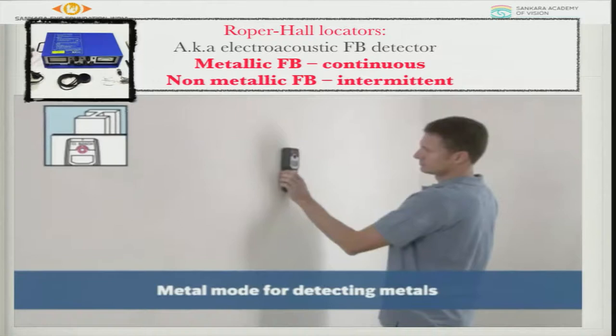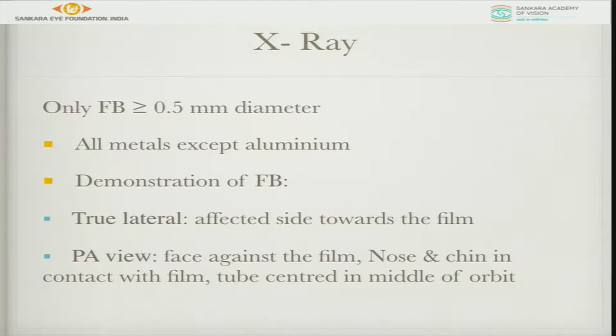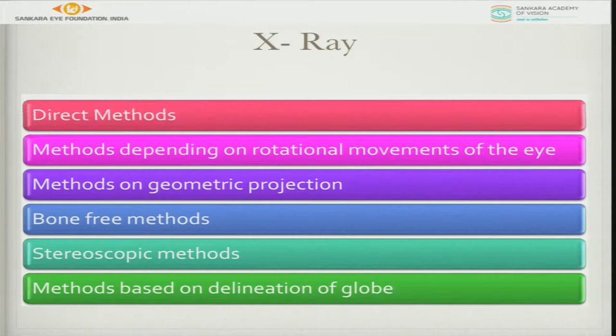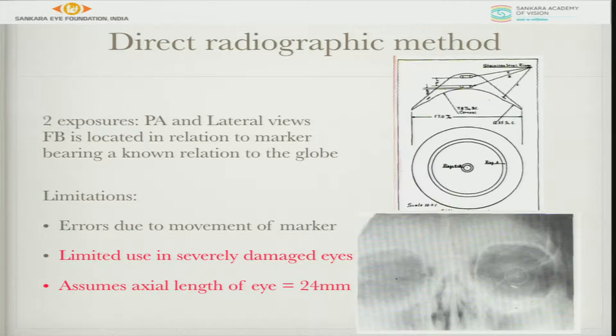These are all of historical importance. X-rays are not used much now, but the anterolateral — sorry, lateral and PA view — is more important. In X-rays, the direct method involves asking the patient to wear a contact lens which has lead pellets in it to identify the foreign body location, but it all depends on assumptions.